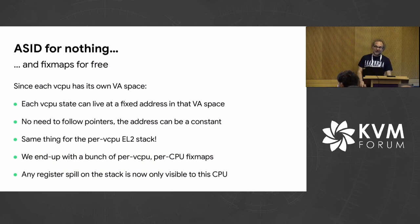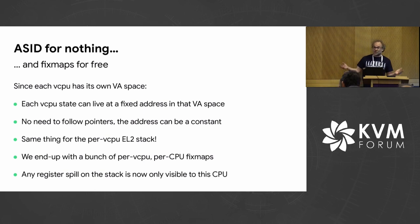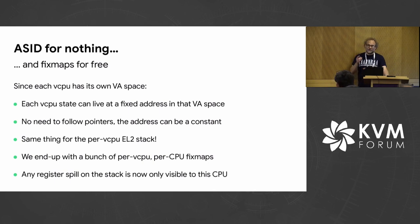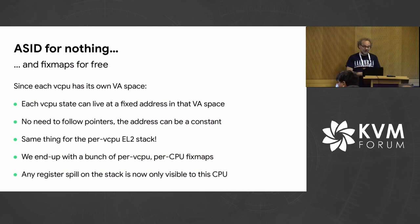And the same thing for the vCPU stack — you know exactly where it is, you don't need to store the address in a data structure. If you want, you can randomize those at boot time and it will still be constant. So we end up with a bunch of per-vCPU, per-CPU fixed maps. A consequence of that is that any register spill on the stack is now only visible to this vCPU, to this physical CPU, because we can only map this vCPU once on this physical CPU — and that's a guarantee.